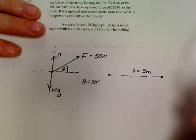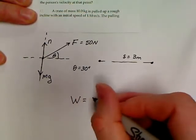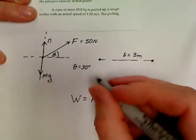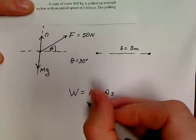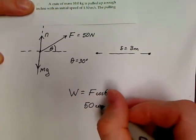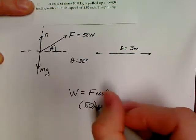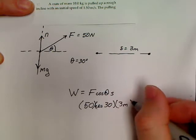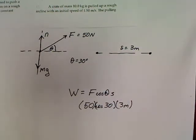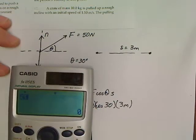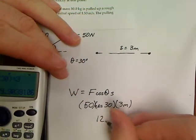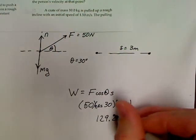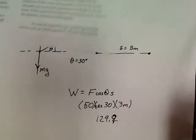All right, and all I want to know is how much work was done. So, work is equal to F. We do have the angle in this one, so I'm going to apply cosine theta s. And so, our problem is nothing but 50 times cosine of 30 times 3 meters. So, we'll multiply this together. 50 times the cosine of 30 times 3 equals 129.9. Except I wrote a 2 down for some reason. 129.9.